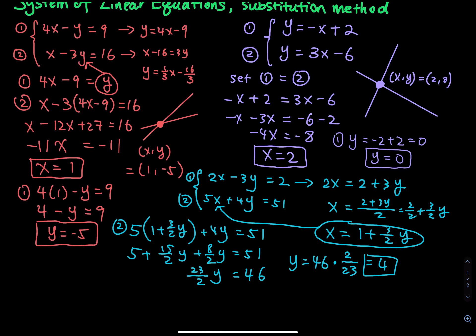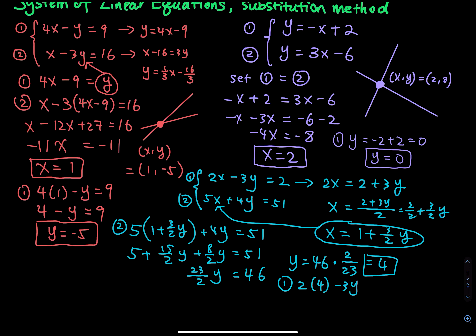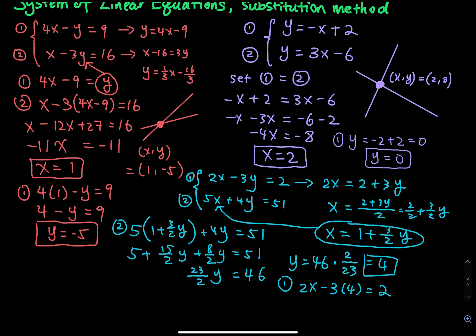So y equals 4. Plugging into equation 1: 2x minus 3 times 4 equals 2. Then 3 times 4 is 12, so 2x equals 2 plus 12 equals 14, and 14 divided by 2 is 7, so x equals 7.